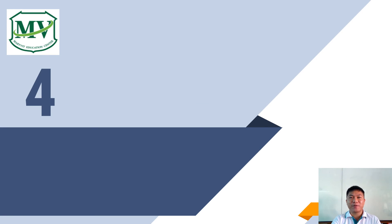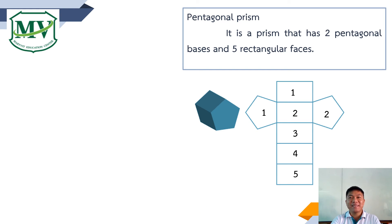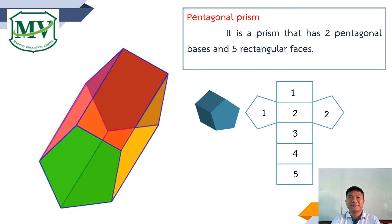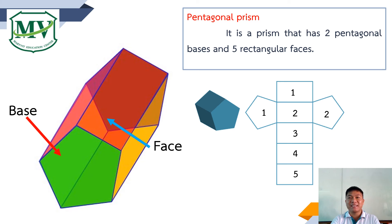The fourth type of prism is the pentagonal prism. It is a prism that has two pentagonal bases and five rectangular faces. Here is the net of the pentagonal prism. As you can see, there are five rectangles and two pentagons representing the faces and the bases respectively.